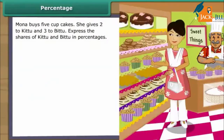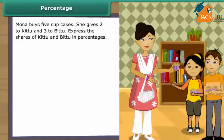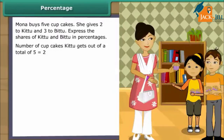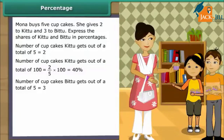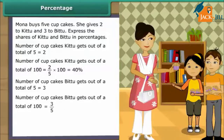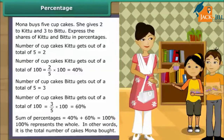Moona buys five cupcakes. She gives two to Kittu and three to Bittu. Express the shares of Kittu and Bittu in percentages. Number of cupcakes Kittu gets out of 5 is 2; out of 100 is 2/5 × 100 = 40%. Number of cupcakes Bittu gets out of 5 is 3; out of 100 is 3/5 × 100 = 60%. Sum of percentages equals 100%, which represents the whole — the total number of cakes Moona bought.